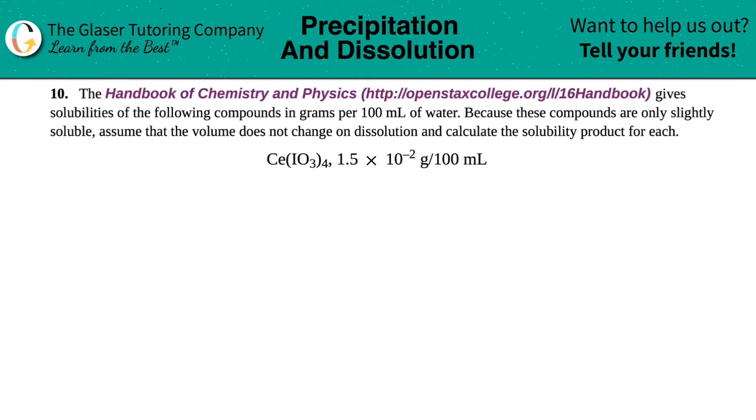Number 10. The Handbook of Chemistry and Physics gives solubilities of the following compounds in grams per 100 mL of water. Because these compounds are only slightly soluble, assume that the volume does not change on dissolution and calculate the solubility product of each. In this case, we have the compound Ce(IO3)4, 1.5 times 10 to the negative second grams per 100 mL of water.